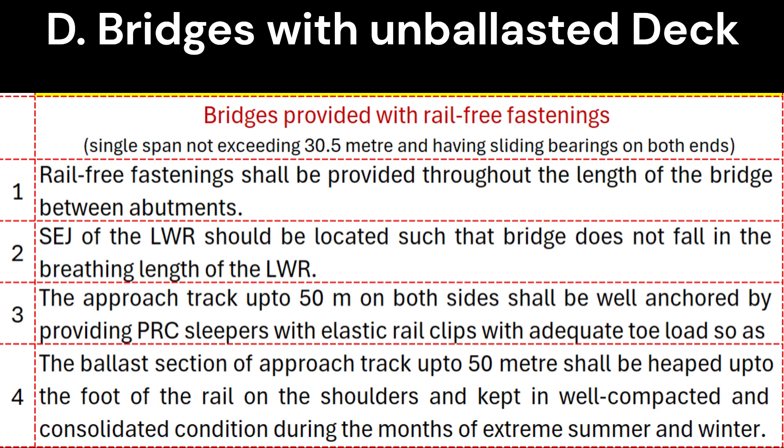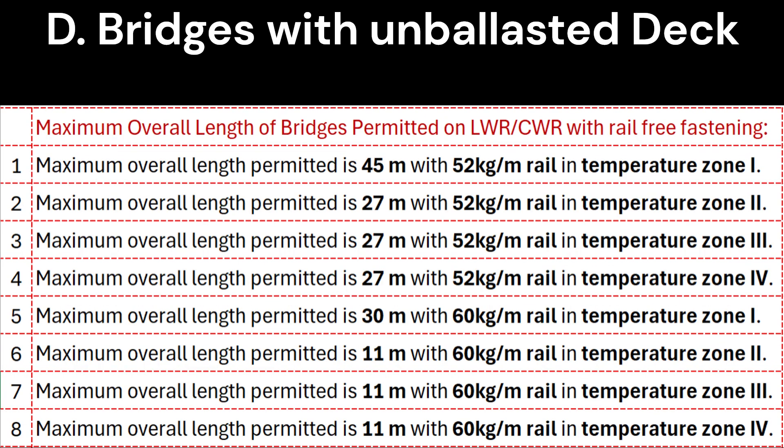4. The ballast section of approach track up to 50 meters shall be heaped up to the foot of the rail on the shoulders and kept in well-compacted and consolidated condition during the months of extreme summer and winter. 5. With the above conditions, the maximum overall length of bridges permitted on LWR or CWR with rail-free fastening shall be as follows.